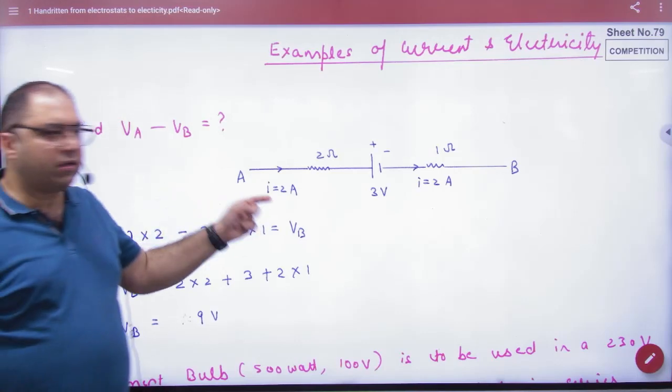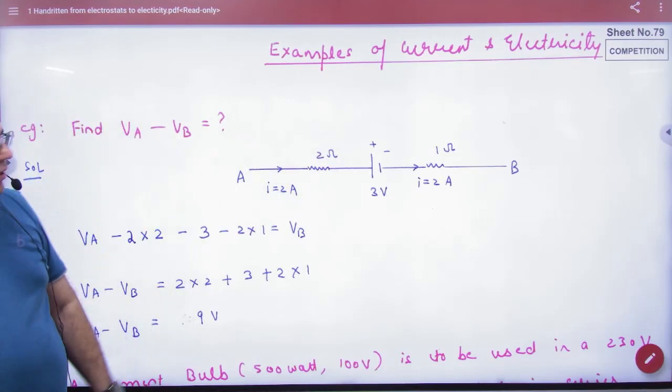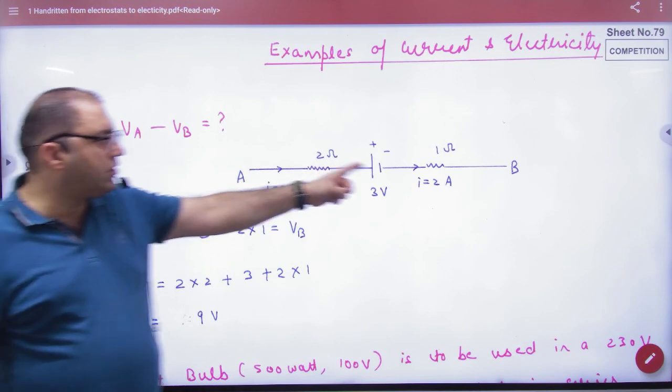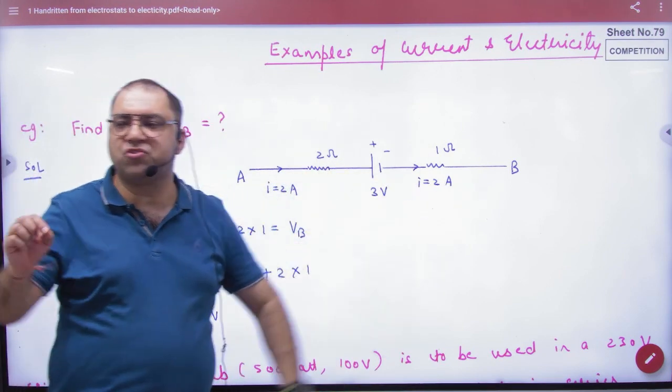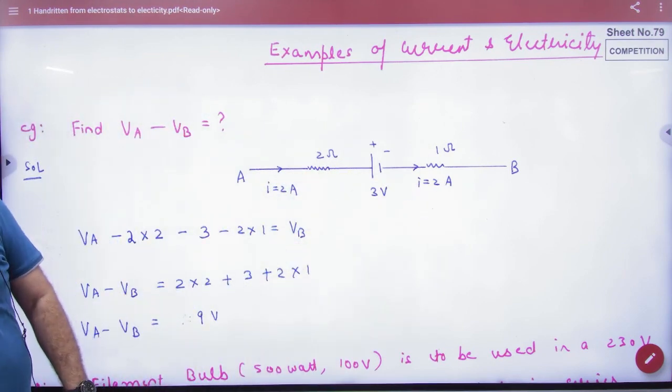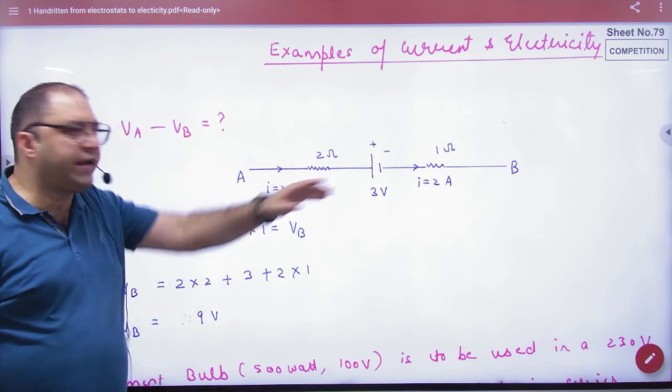The question describes a circuit where current is running, a battery is present, resistances are present, between points A and B. You have to calculate the potential difference between A and B.